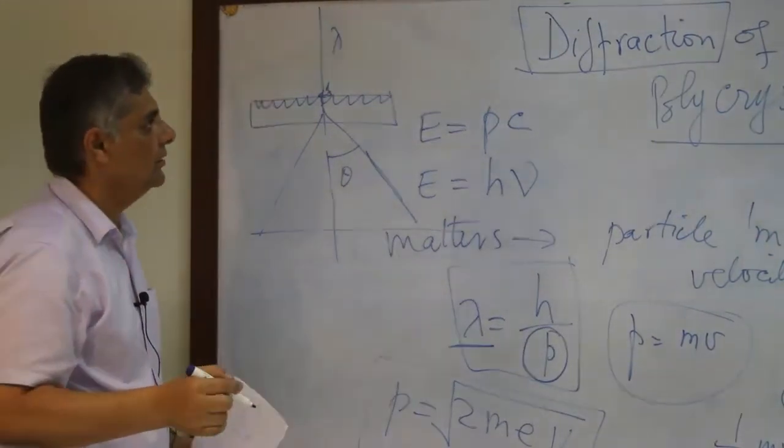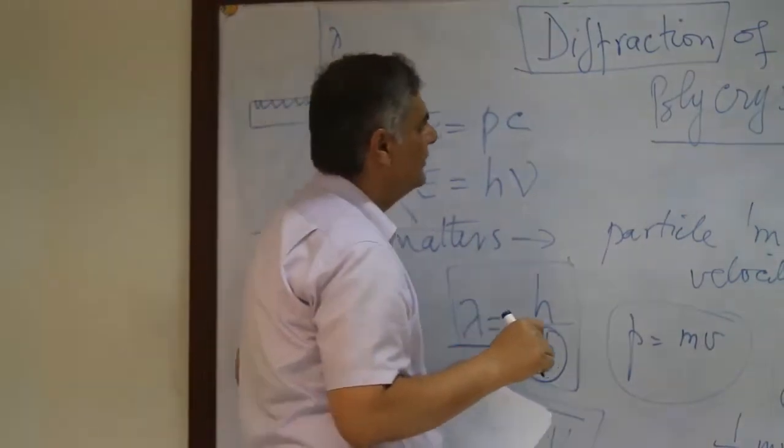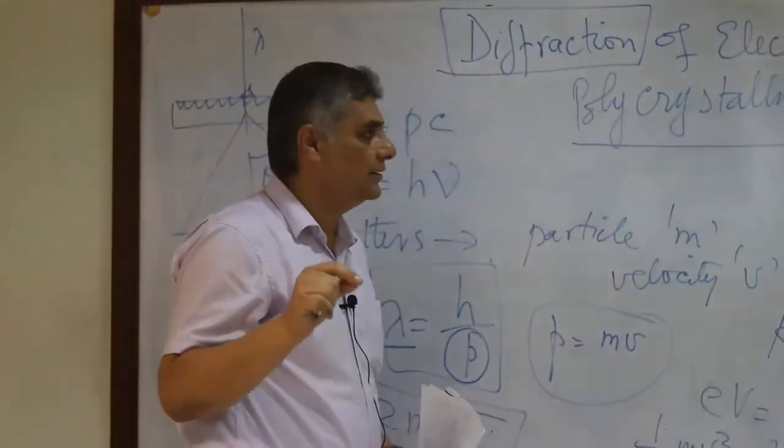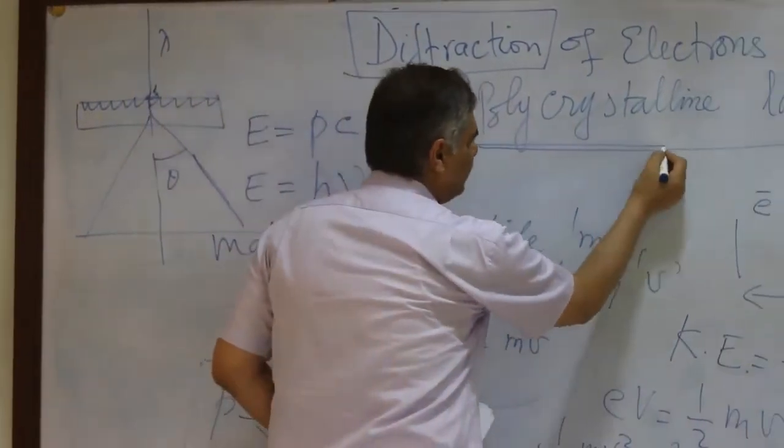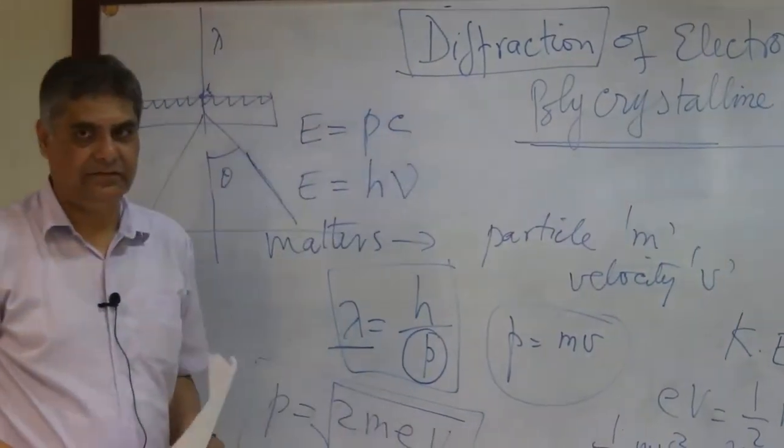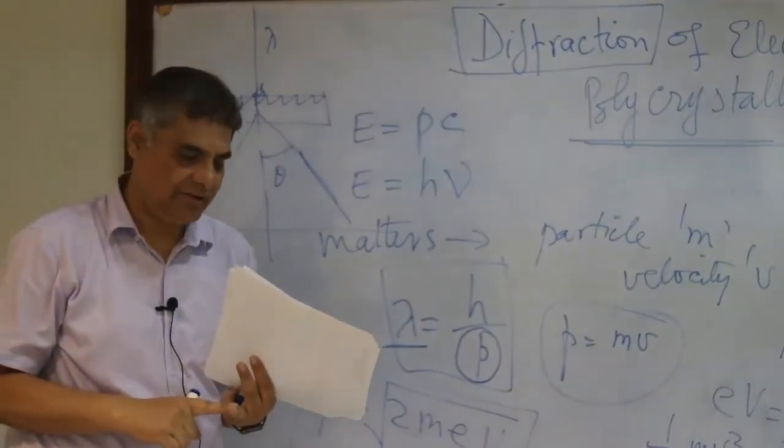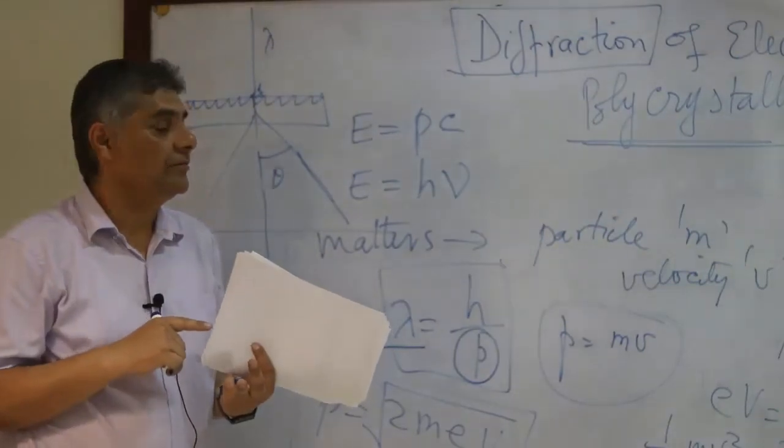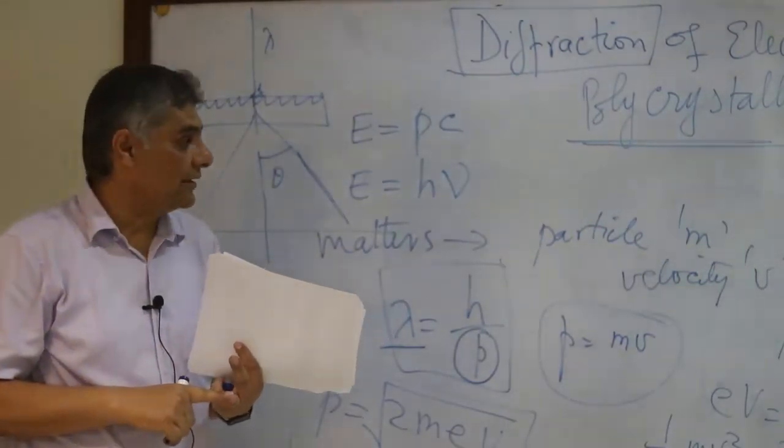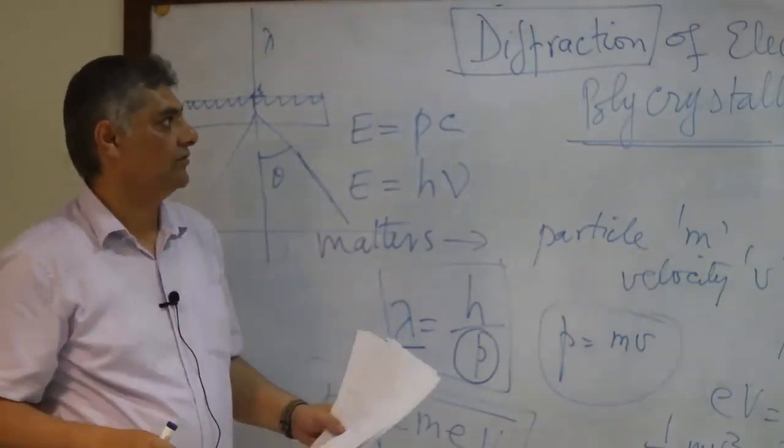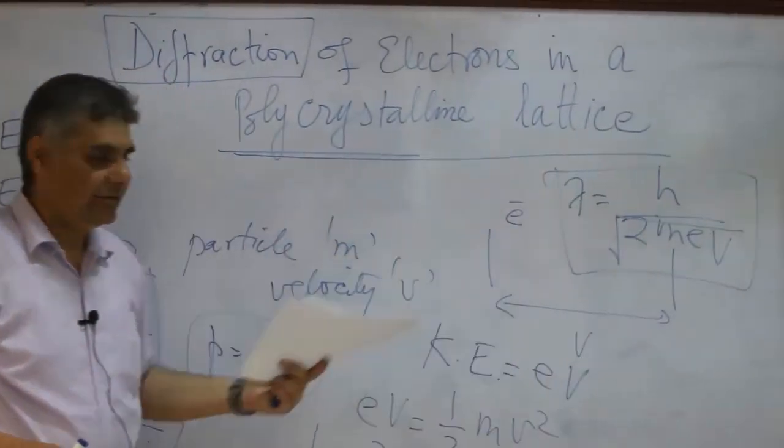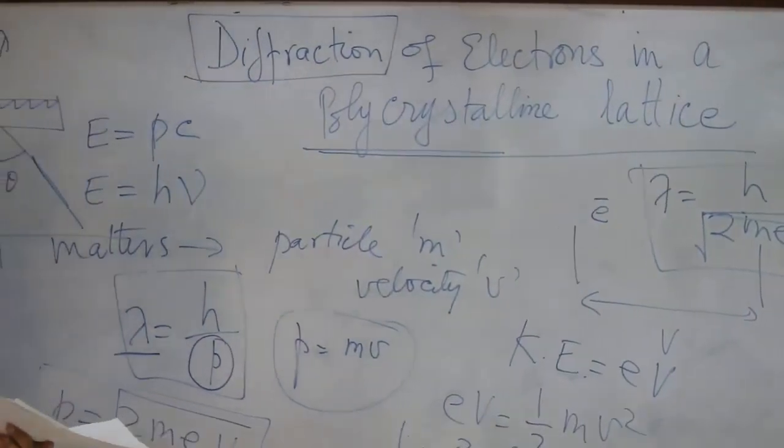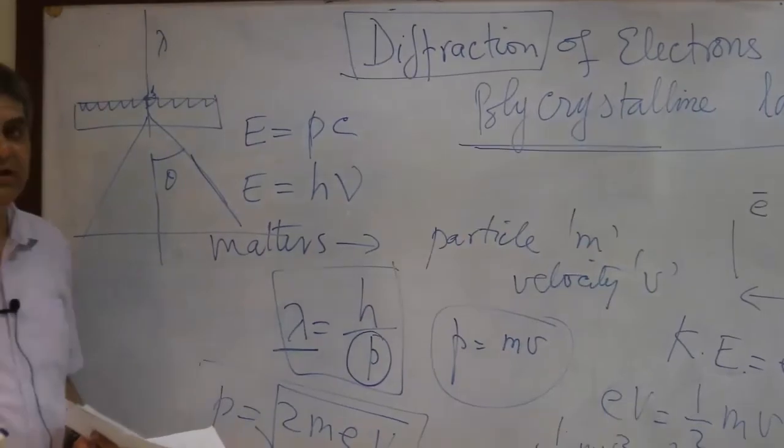Using this polycrystalline lattice, we can determine the wavelength of the electron beam and we can determine the interplanar distance of this lattice. Now let's see how the diffraction works.